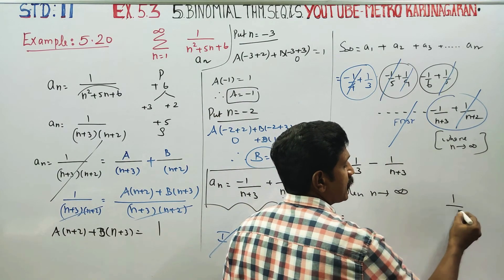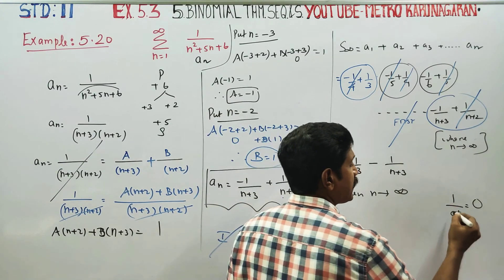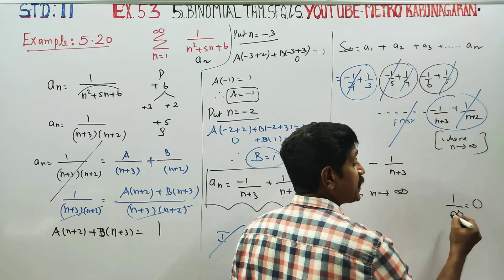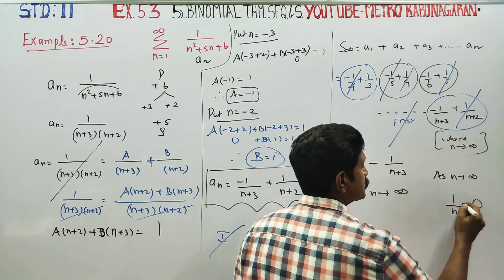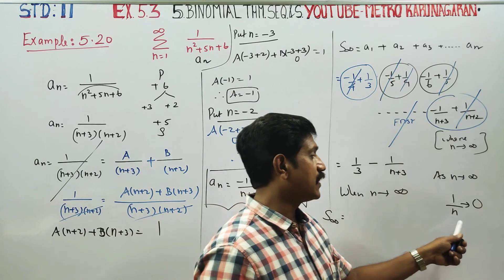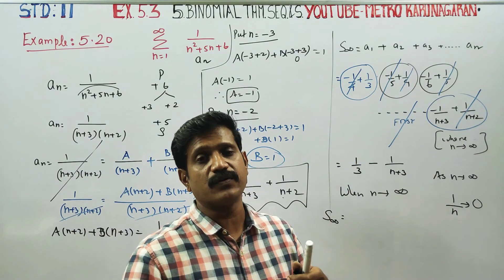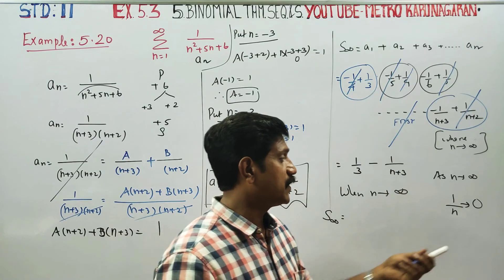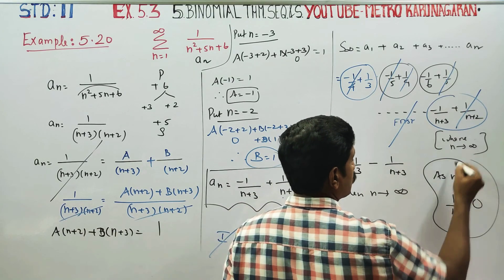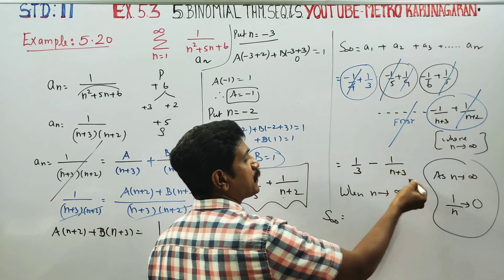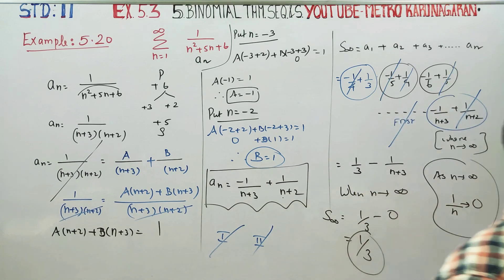1 by infinity is actually zero. As n tends to infinity, 1 by n turns to zero. Similarly, 1 by (n+3) turns to zero. The answer is 1 by 3 minus zero. Your final answer will be 1 by 3 for this problem.